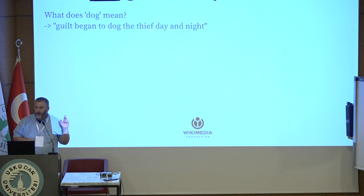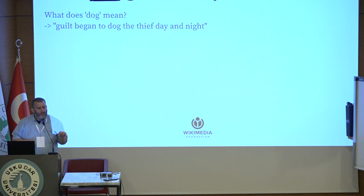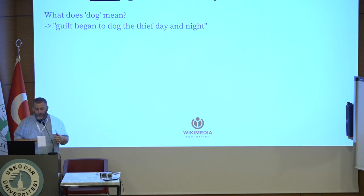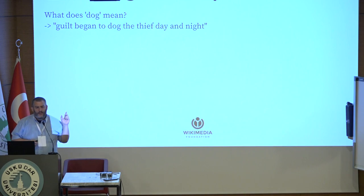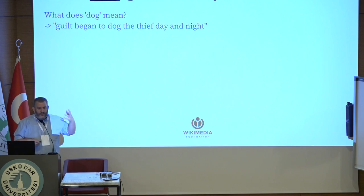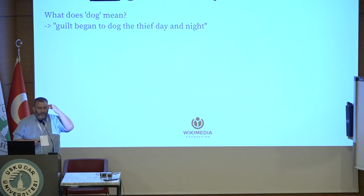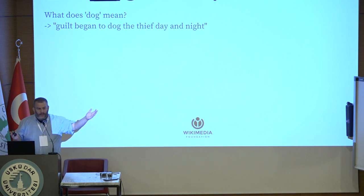But in English, "dog" can also be a verb that means to follow or stalk someone — like a hunting dog. That's the connection. When people say "to dog someone" — for example, "guilt began to dog the thief day and night" — that's a sentence most native English speakers would understand without thinking about the animal at all. They would understand that guilt, the emotion, was chasing this person, burdening this person day and night. Their brains are ready to accept the word dog in two very different senses, and they do it naturally.